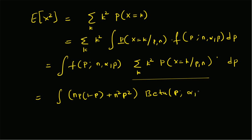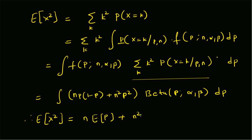Plugging in these values, we integrate np(1-p) + n²p² against the beta distribution of p with parameters α and β. Grouping terms, E[X²] equals n times the integral of p times the beta density — which is E[p] — plus (n²-n) times the integral of p² times the beta density, which is E[p²].